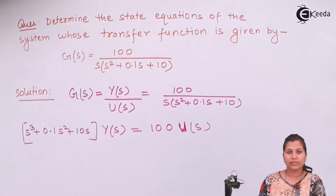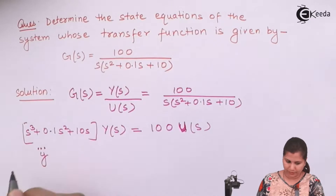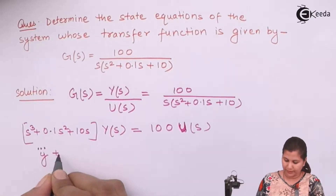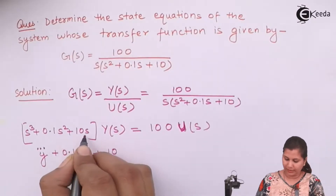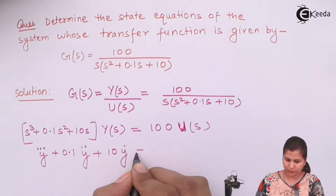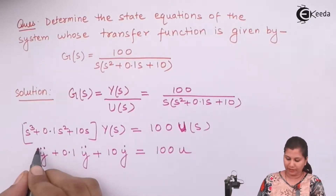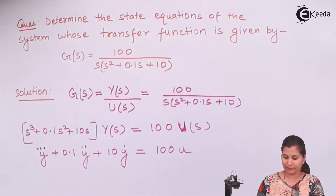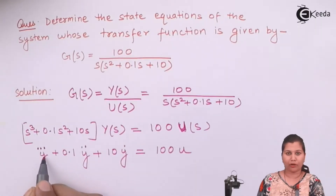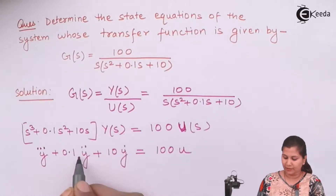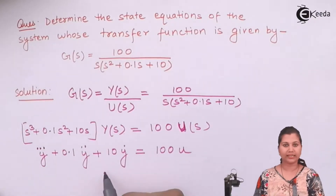Now we take the inverse Laplace transform. When we take the inverse Laplace transform we get derivative notation over the variable. S³Y(S) becomes Y triple dot, 0.1S²Y(S) becomes Y double dot, and 10S·Y(S) becomes 10Ẏ. So the equation becomes: Y⃛ + 0.1Ÿ + 10Ẏ = 100U.